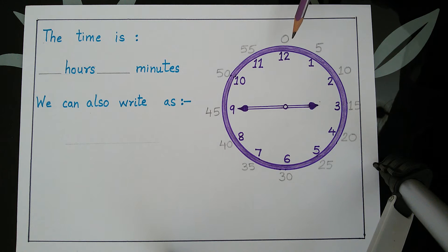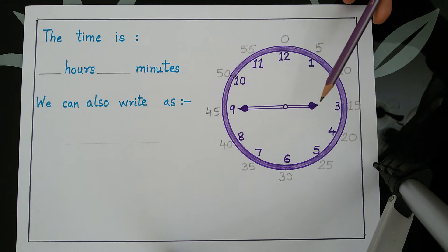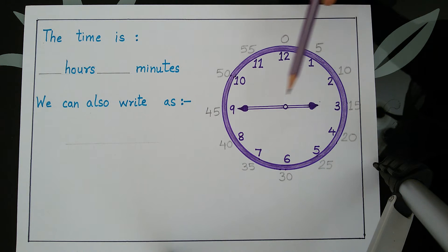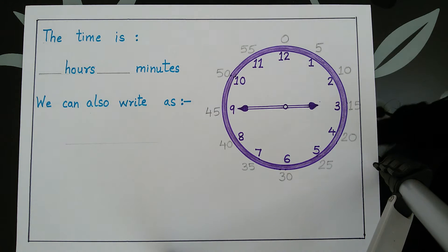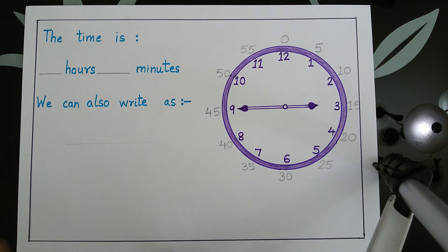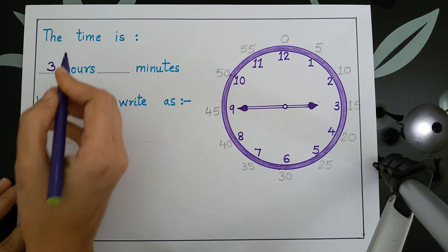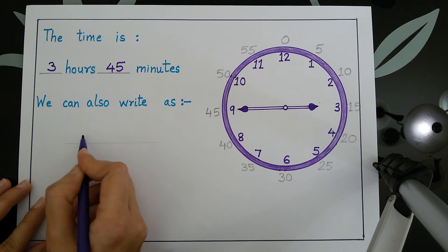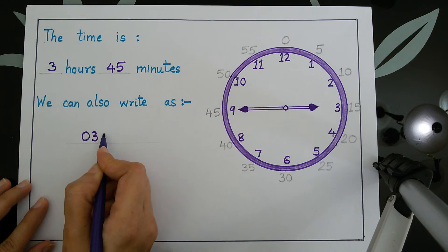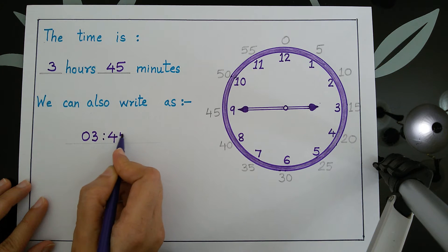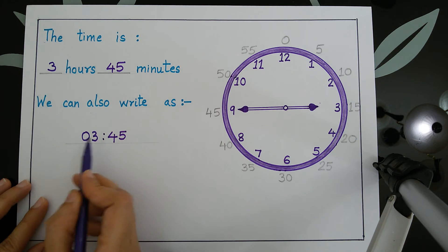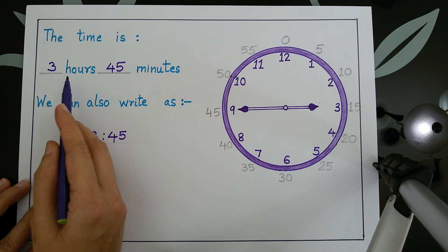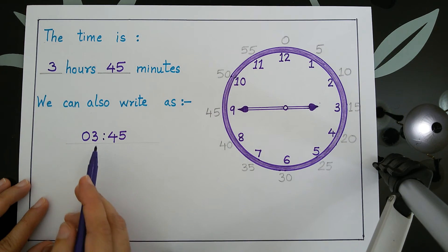This is a picture of a clock showing a particular time. So what is the time here? The small hand is on 3 and the big hand is on 9. So we say the time is 3 hours 45 minutes. We will write it as 3 hours 45 minutes. We can also write this time as 3, colon, 45. When we write only single digits we first write a 0. So 3:45. So we say the time is 3 hours 45 minutes or we can also write it as 3:45.